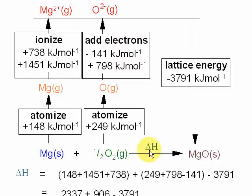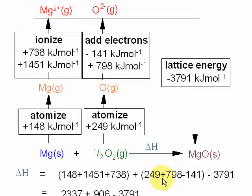To work out ΔH, it's a matter of going up this arrow and down this arrow. Plus 148, plus 738, and plus 1451 gets you from magnesium solid to Mg2+ in the gas phase. The oxygen side: 249, 798, and minus 141 get you to O2- gas. And the minus 3791 is the lattice energy.